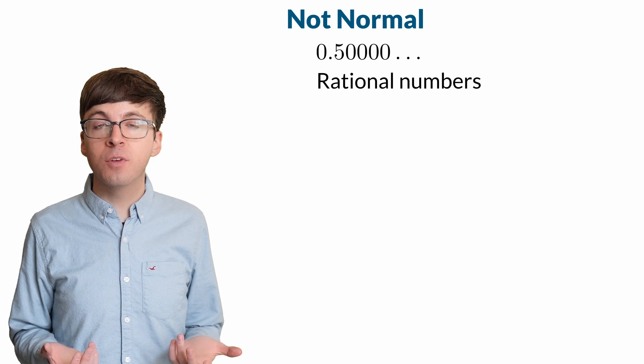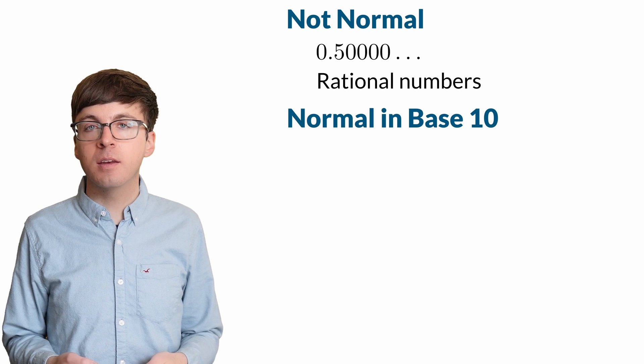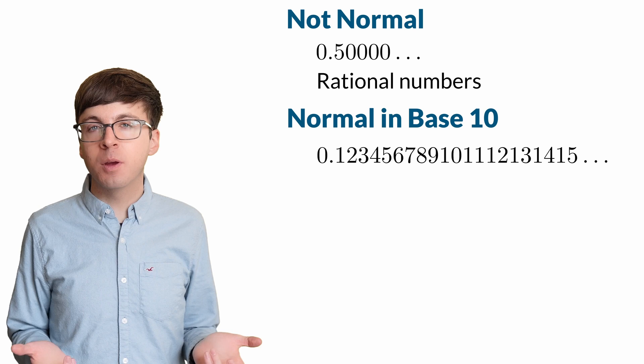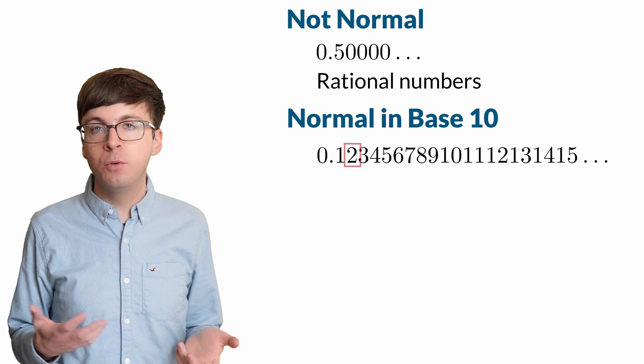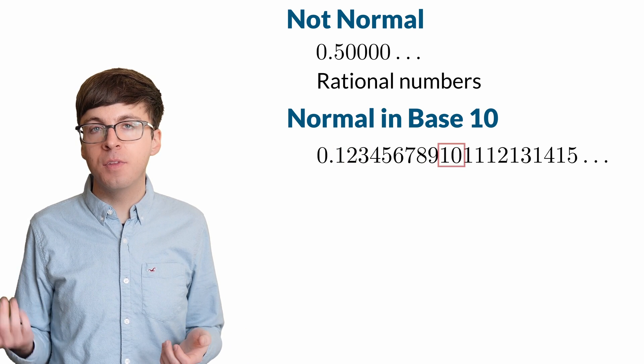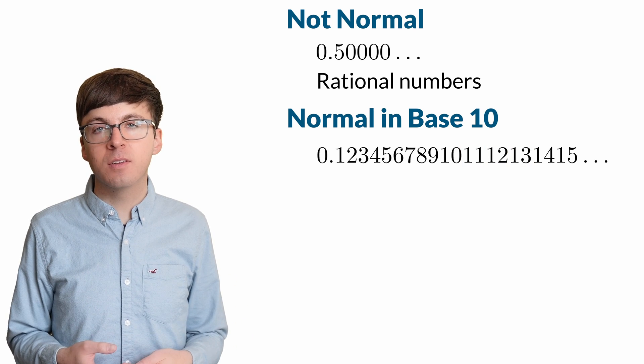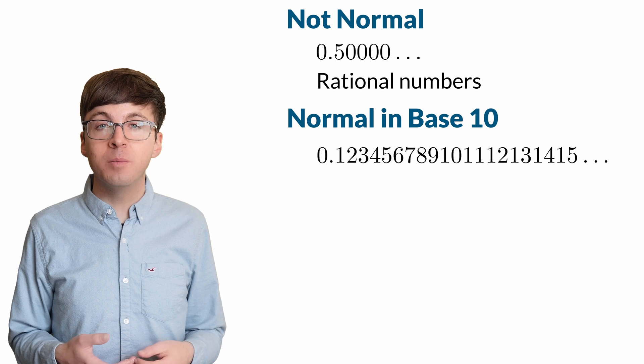But there are some numbers that we know are normal in base 10. Here's one of them. After the decimal point, list all the natural numbers in order: 1, 2, 3, up to 9, and then 10, 11, and so on. This is called the Champernowne constant. This number is normal in base 10.